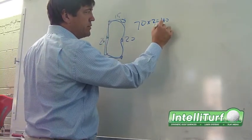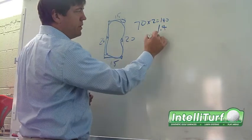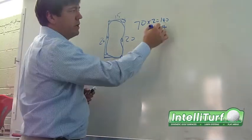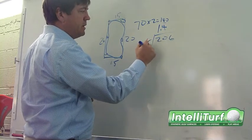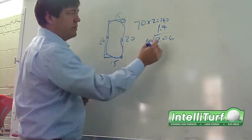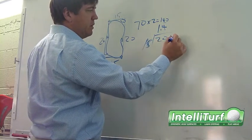You can take 140 times 1.4 and that's 206, and then you have to divide that by 15, which is the width of the turf, to get how long is the length.